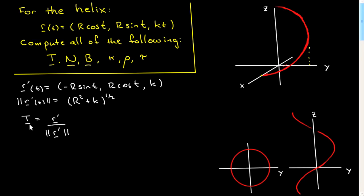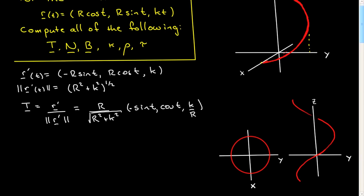To get the unit tangent vector, we simply divide. I'm going to pull an R outside and write it this way, and then the vector part is minus sine T, cosine T, and K over R. That's our unit tangent vector. You see it has three components. It points inwards towards the center, but also has a vertical component.